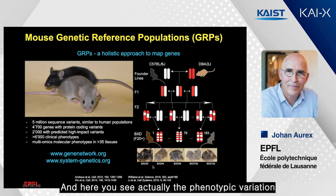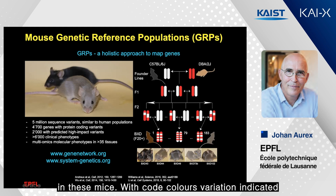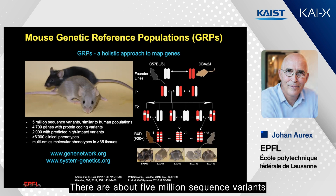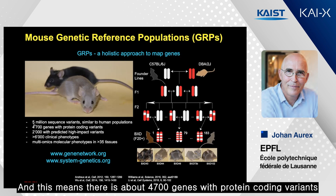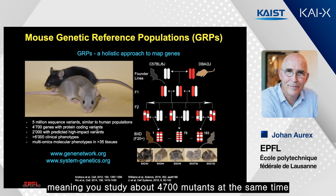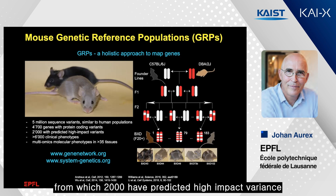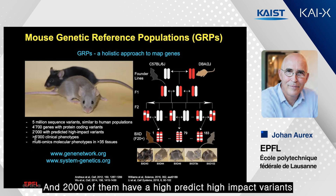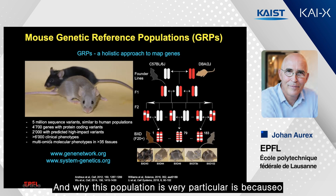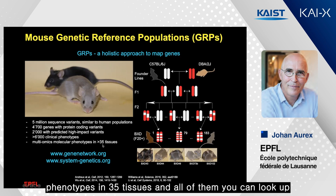You can see the phenotypic variation in these mice with color variation indicated. There are about 5 million sequence variants, similar to variants in human populations, segregating in these mice. This means there are about 4,700 genes with protein-coding variants, meaning you study about 4,700 mutants at the same time, from which 2,000 have predicted high-impact variants. What makes this population very particular is that there are 6,000 clinical and molecular phenotypes in these strains.